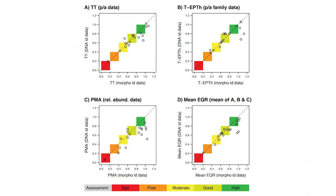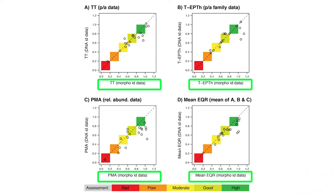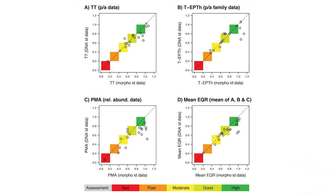We used both the metabarcoding data and the morphology-identified taxa list to calculate assessment indices based on the Finnish stream monitoring program. The DNA metabarcoding-based indices for the BF2-BR2 primer combination are plotted against the morphology-based indices. Despite some variation, the assessment results are very similar between DNA-based and morphology-based methods, indicating that DNA metabarcoding is well-suited for ecosystem assessment and integrates well with current assessment approaches.